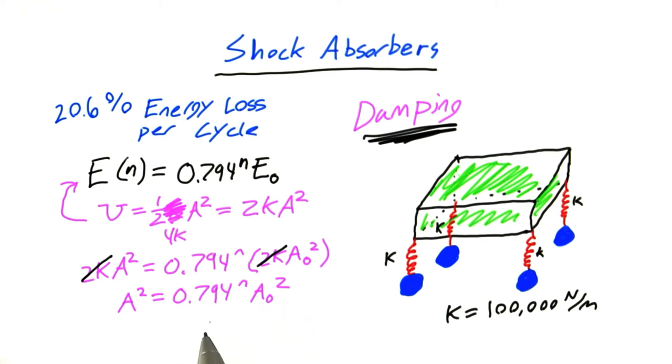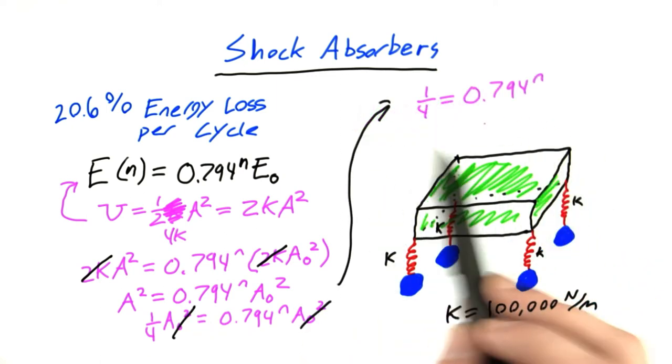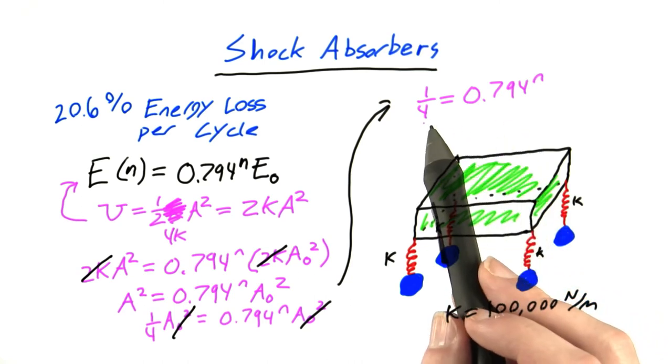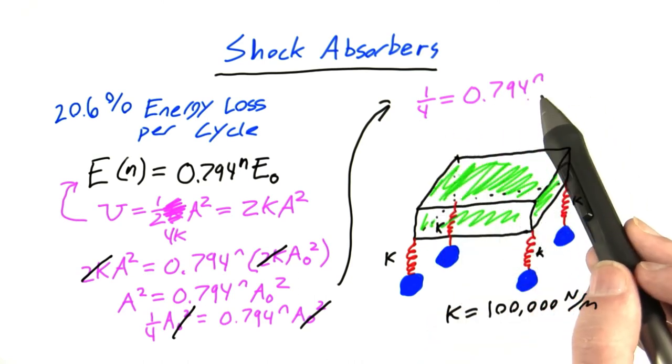Now let's remember what we're looking for. We are looking for the amplitude A that's equal to exactly half the original amplitude. So we can substitute one half A0 for A here. And that gives us this equation here. And quite nicely, the A0 terms cancel. And that gives us this interesting equation up here, that one fourth equals 0.794 to the n power.